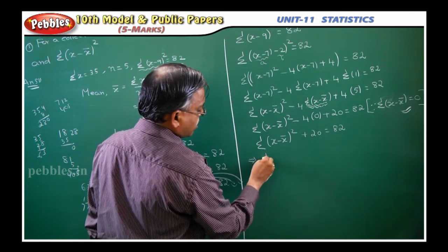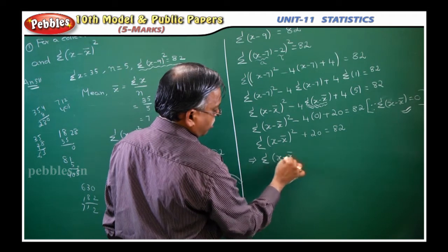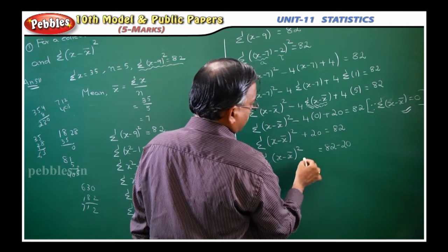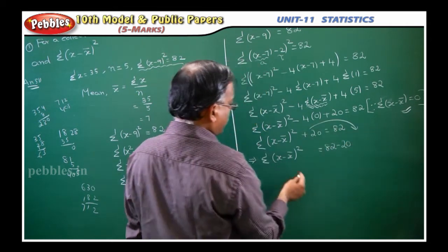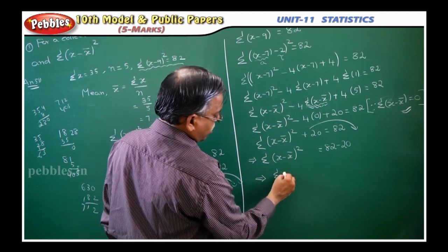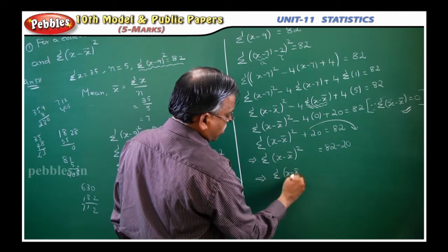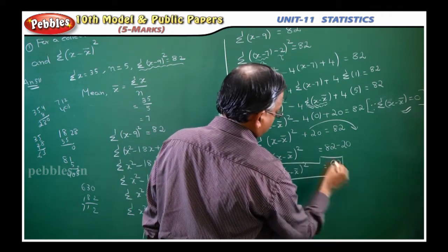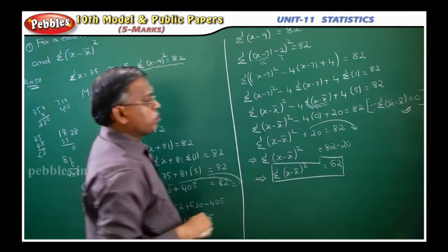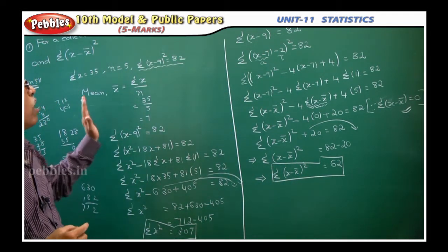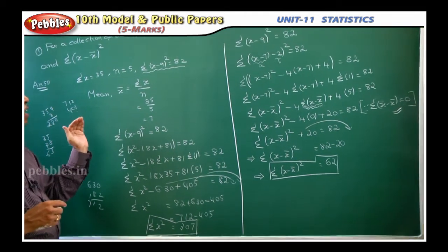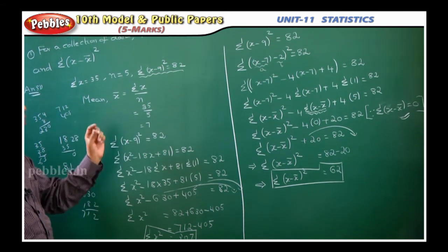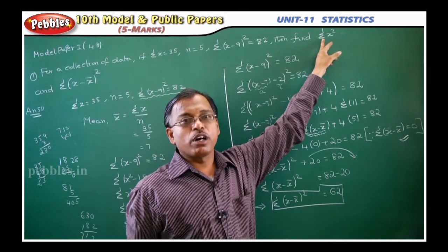Therefore, sigma (x minus x̄) whole square equals 82 minus 20, which equals 62. That is your answer.